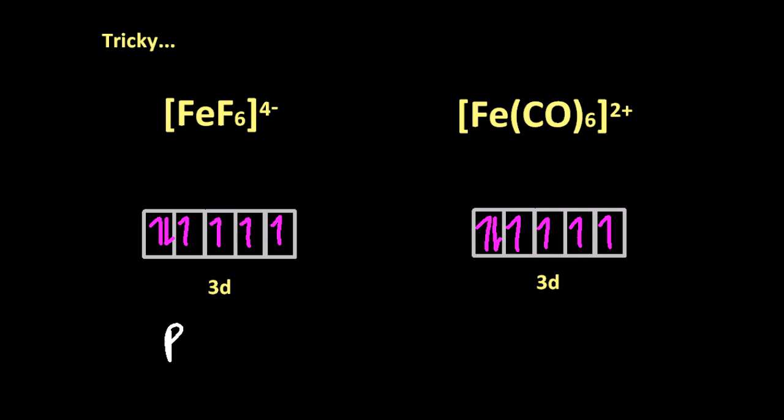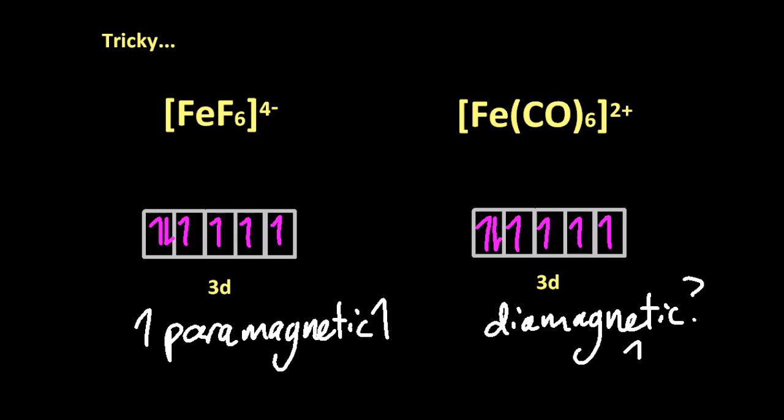Not iron. Iron ions. Iron is ferromagnetic. These are iron ions. Paramagnetic? Oh, that one's diamagnetic.